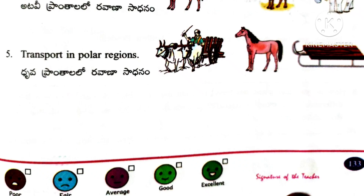Question number 4: Transport in polar regions. Here also given three different pictures. Answer is the last picture — third one.